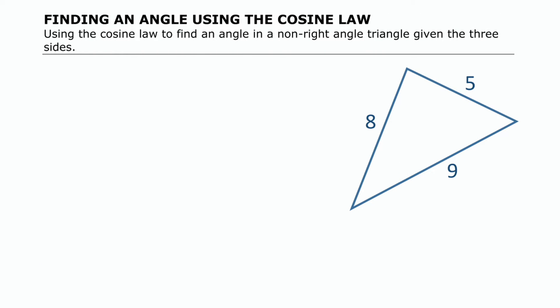If we're going to use the cosine law to find an angle here, since the cosine law involves three sides and one angle, and it's the angle we're finding, we need to have three sides of a triangle given. Cosine law allows you to use three sides to find an angle.